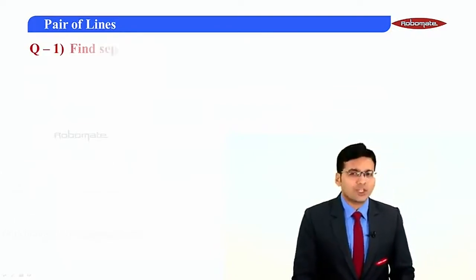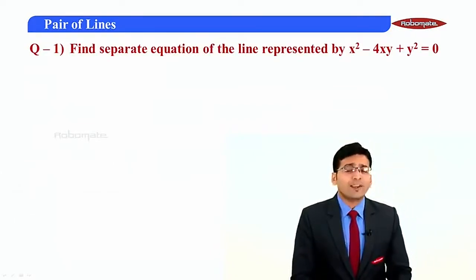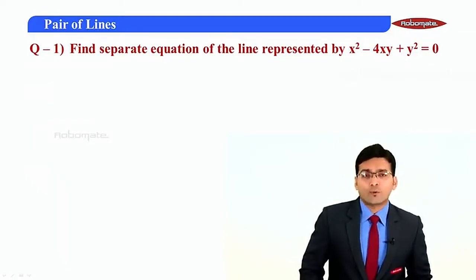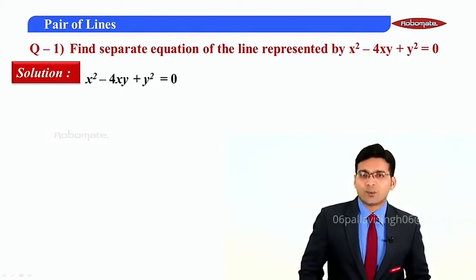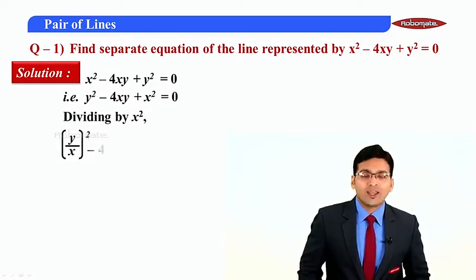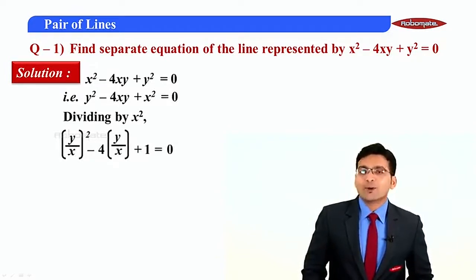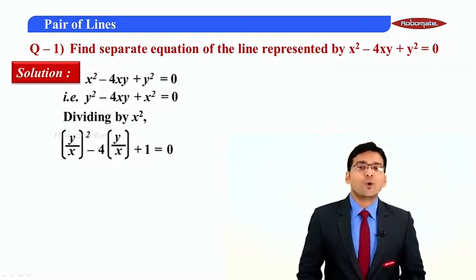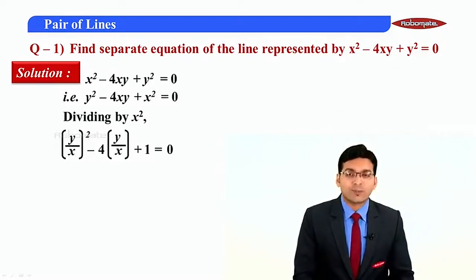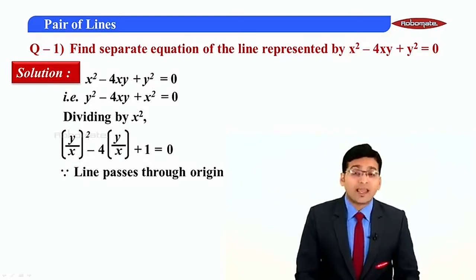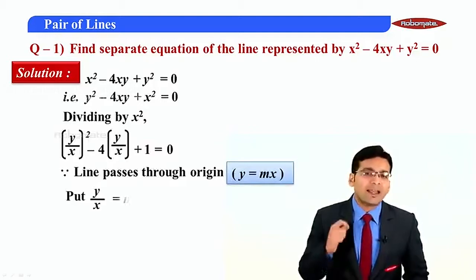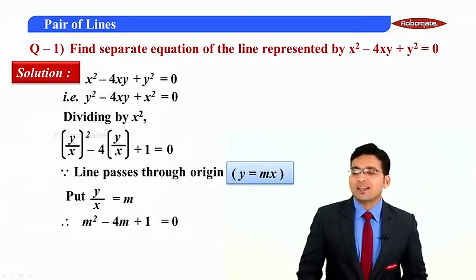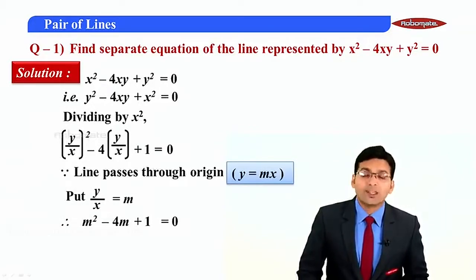Now let us try one question. Find the separate equations of the lines represented by x² - 4xy + y² = 0. Dividing by x² we get (y/x)² - 4(y/x) + 1 = 0. Since the line passes through origin, y = mx, so putting y/x = m gives m² - 4m + 1 = 0.